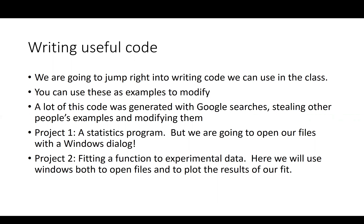The first project is going to be very simple. We're going to write code to do something you do all the time in lab classes: given a list of numbers, calculate a mean value and a standard deviation. To add a little twist, we are going to take the data from a file saved as a text file on our computer, rather than from the keyboard, which would be very tedious. We're going to open it using a Windows dialog box, so there will be a little bit of GUI use in this first project.